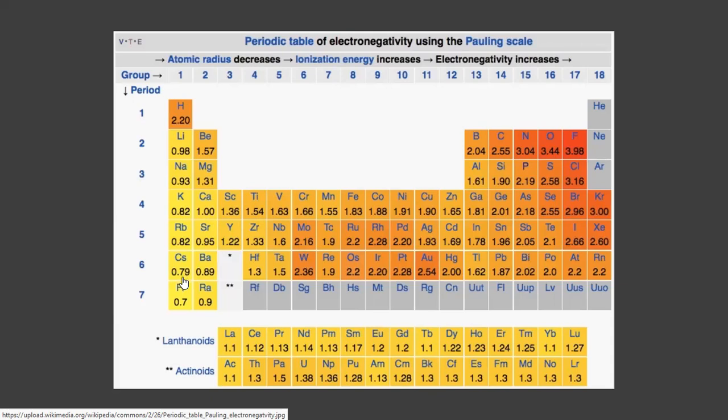This is related to the atomic radius. As we go from left to right across the period, the atomic radius is decreasing, which means the effective nuclear charge on the outermost electron will be higher. So it is easy for that nucleus to pull more electrons in.